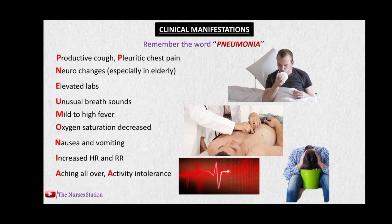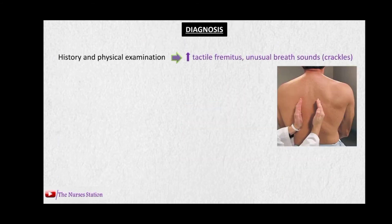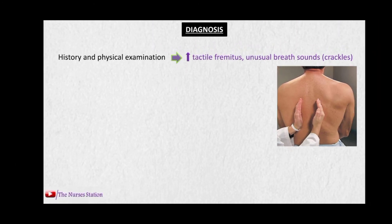To diagnose pneumonia, we take history and perform a physical examination where we can find increased tactile fremitus — a technique where we place the palmar side of our hands on the chest or back and ask the patient to say '99' or 'blue moon' to assess vibrations. When lung fields are consolidated or filled with fluid, tactile fremitus is increased. Crackles are also typically heard.